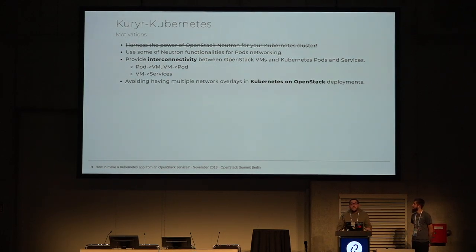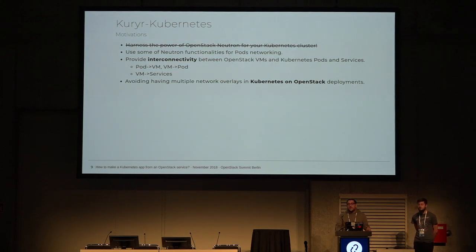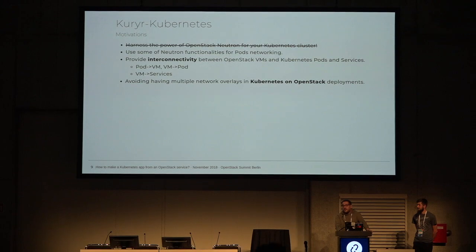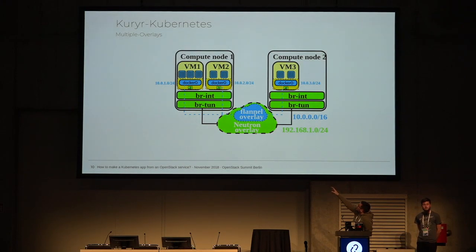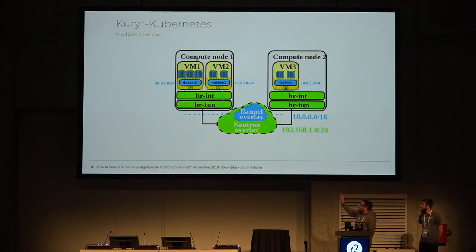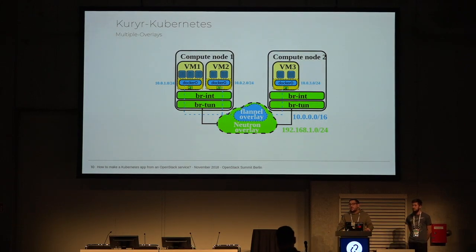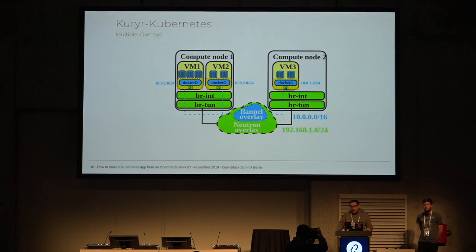That's the main motivation for the project. If you don't use Kuryr, you can of course have networking between Kubernetes and OpenStack, but you will have several network overlays and double network encapsulation. For example, using Flannel as your default network solution for Kubernetes, you would have both the Neutron overlay and the Flannel overlay, which is not very effective. We basically wanted to squash it and have one single network solution that works for everything - connecting Neutron ports directly to the pods.